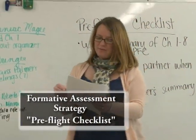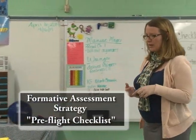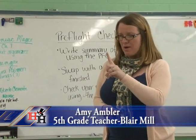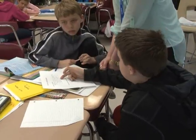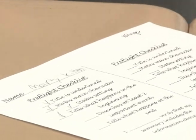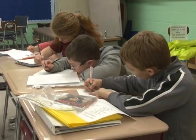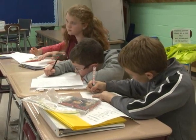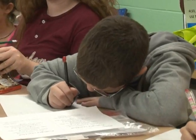We're going to use a pre-flight checklist — remember, we've used it with Mr. Milburn for our summaries. These ones look a little different because they're shorter. We're doing a one-paragraph summary on our first eight chapters of Ringer. Teacher Amy Ambler not only helped Kyle in his class but also used the pre-flight checklist formative assessment strategy for her own students, who had to condense eight chapters of Ringer into a one-paragraph summary including a checklist of important information.